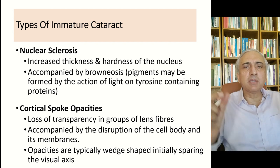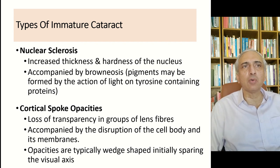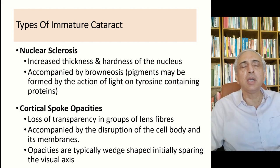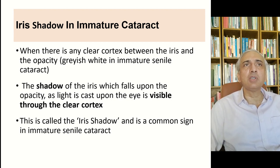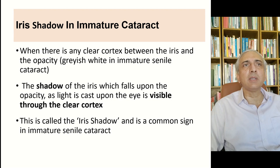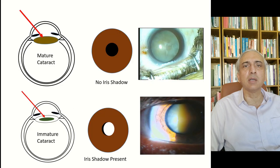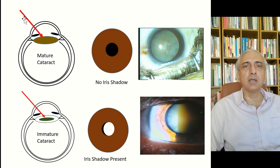Cortical spoke opacities are another type: there is loss of transparency in groups, with some fibers opacified appearing as spokes, accompanied by disruption of the cell body. Opacities are typically wedge-shaped at the periphery and in early stages do not significantly reduce vision. The iris shadow in immature cataract occurs when clear cortex exists between the iris and the opacity, making the iris shadow visible through the clear cortex.